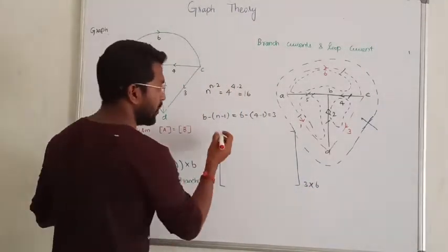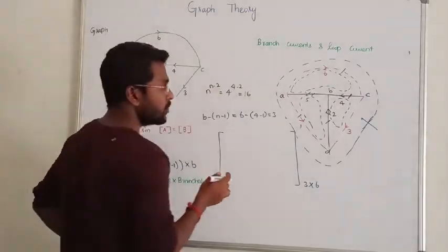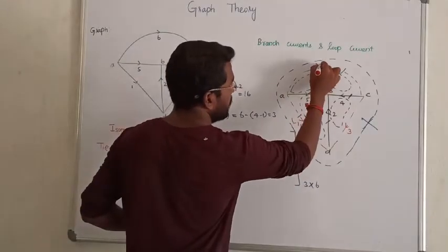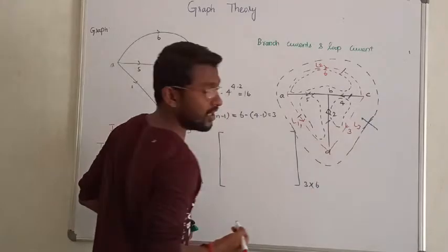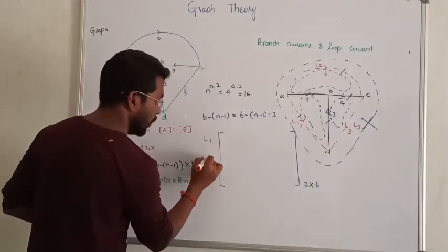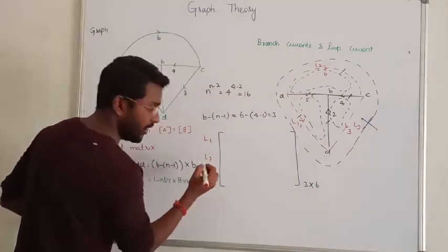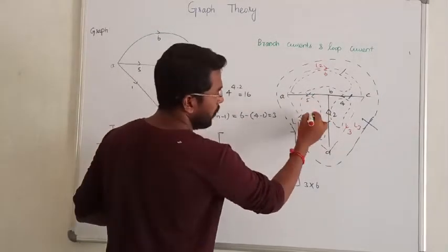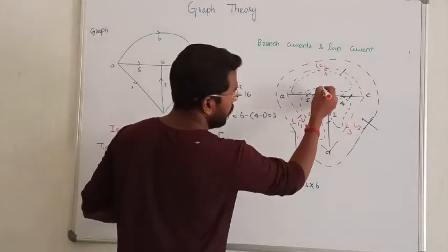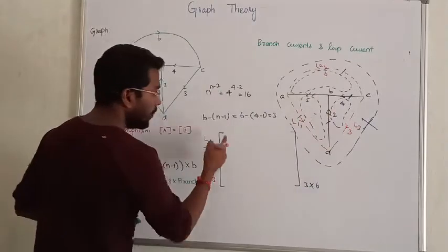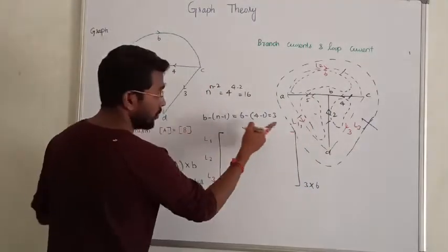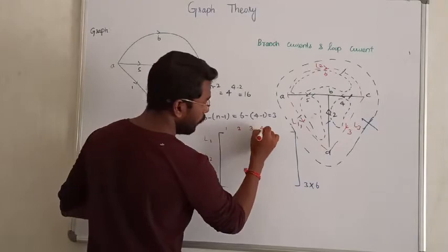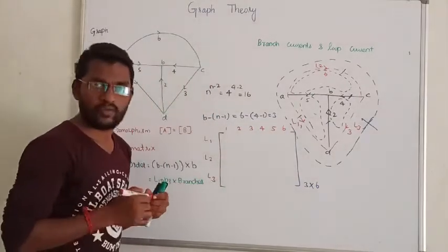Let me set up the matrix. I will consider link 1 as loop 1, link 2 as loop 2, link 3 as loop 3. The columns are branch 1, 2, 3, 4, 5, 6.